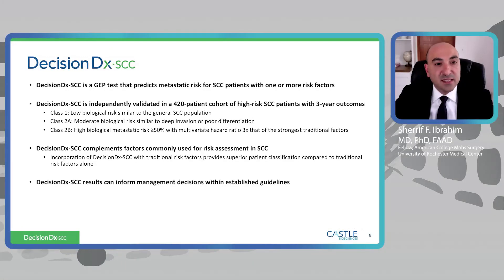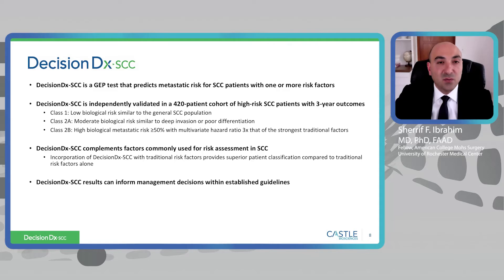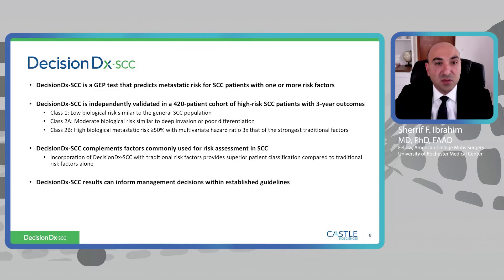The DecisionDX SCC test is a gene expression profiling test that predicts metastatic risk for squamous cell carcinoma patients with one or more risk factors. It is based on an independently validated cohort of 420 high-risk SCC patients who had three-year follow-up data. It designates a class score: class 1 being the lowest biological risk for metastasis, class 2A moderate, and class 2B having a very high biological metastatic risk of greater than 50%. This is not meant to replace traditional clinical-pathologic staging, but to complement these approaches in risk assessment.